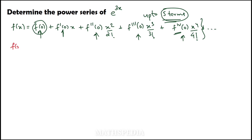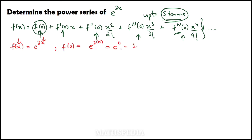f(x) is given in the question as e^(3x). From this I can find f(0). f(0) basically means in place of x I have to put 0: e^(3×0) = e^0, which is equal to 1.